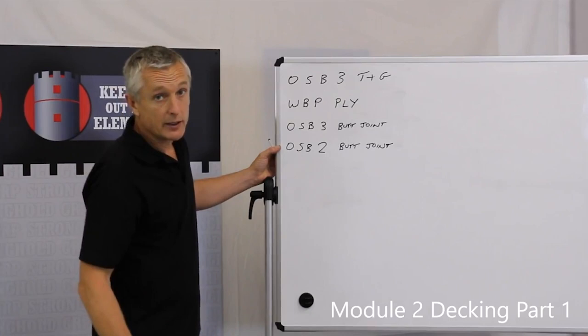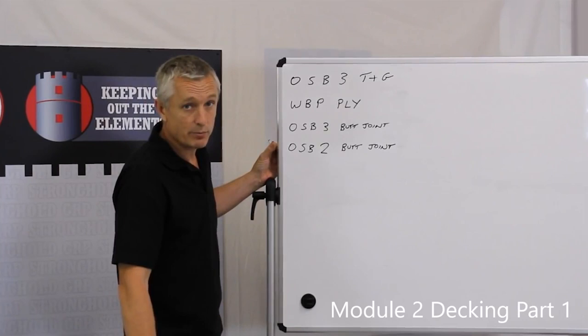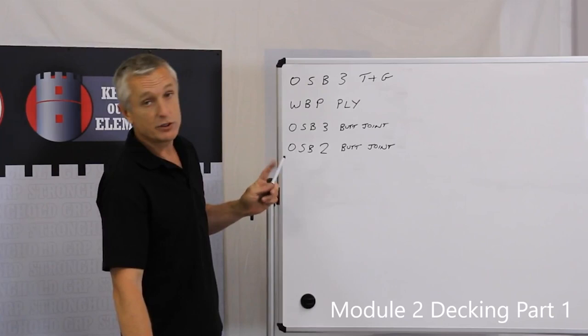Next product to avoid, although we come across it quite commonly, is OSB2. OSB2 is quite a cheap product, hence it's being used quite commonly. You should avoid using it because OSB2 is not pre-expanded.